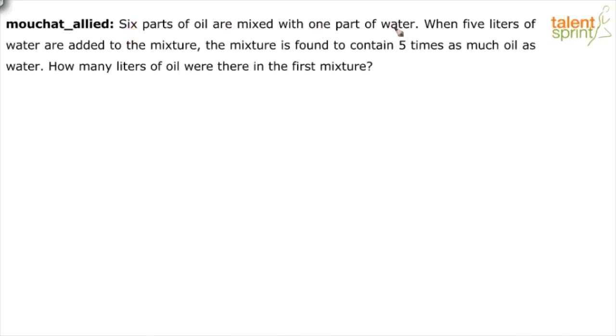Six parts of oil are mixed with one part of water. When five liters of water are added to the mixture, the mixture is found to contain five times as much oil as water. How many liters of oil were there in the first mixture?